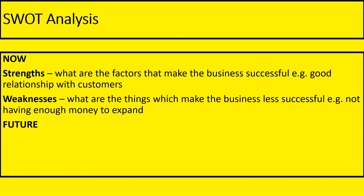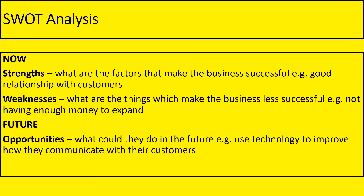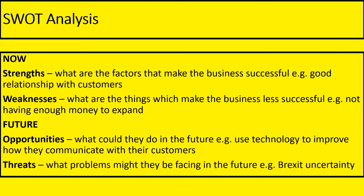Then we're going to look at the future — O for opportunities. What could your business do in the future? Think about technology as a trend. Could they use it to improve how they communicate with their customers? If we were the sandwich shop, could we bring out a range of vegan sandwiches? If we were a car business, could we bring out electric cars? Lots of opportunities in the future. But also, T for threats — what are the big problems they might be facing? I would say we still don't know about Brexit; Brexit uncertainty is going to be a threat. A fall in the economy or increased unemployment might also be a threat. That is your SWOT analysis — what's good and bad about the business, what could they do, and what problems might they face in the future?